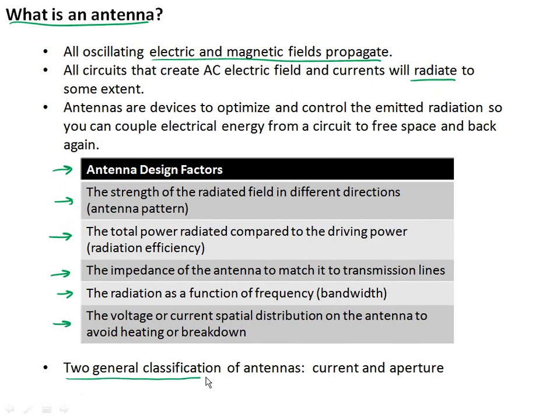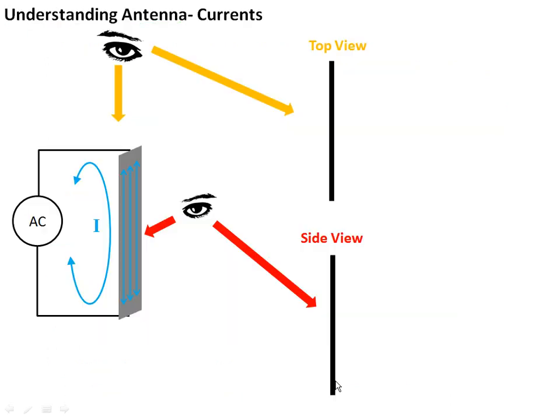There are two general classifications of antennas: antennas that create distributions of currents that radiate, and what we call aperture antennas, where we create a particular electric or magnetic field distribution across some region in space or an aperture, and then that has the radiating characteristics we want. We're not going to be talking about aperture antennas. That's a more advanced subject. We're simply going to stick with the current antennas and some fairly simple ones.